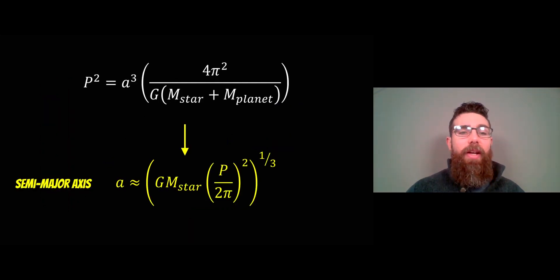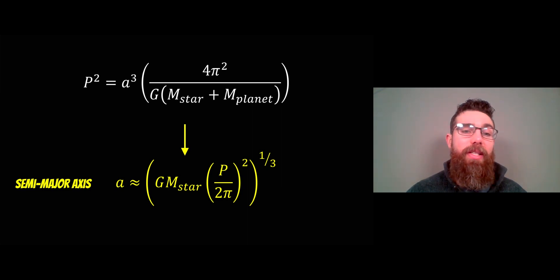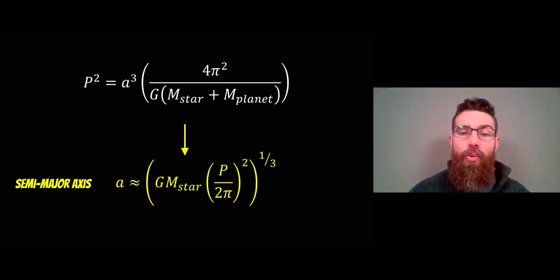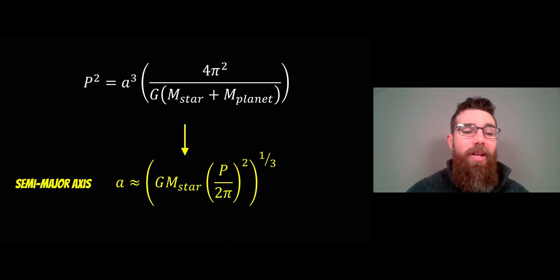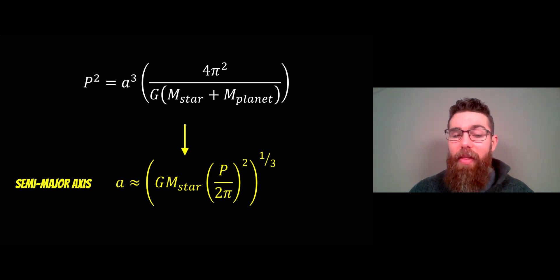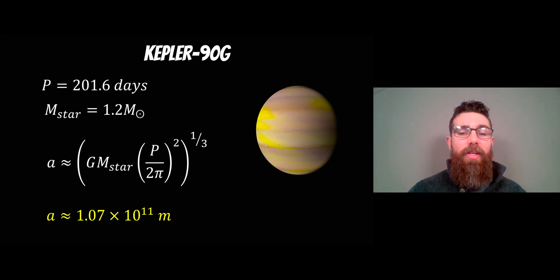At the top we have an equation relating the square of the orbital period P² to the semi-major axis a on the right-hand side, along with the gravitational constant, the mass of the star, the mass of the planet, and 4π² on the top. We can rearrange that for the semi-major axis to get the bottom expression. Note that we don't have the mass of the planet there — most of the time the mass of the planet is so much smaller than the star that it can be neglected. So the approximate semi-major axis only requires the orbital period, calculated from the time between transits, and the mass of the star.